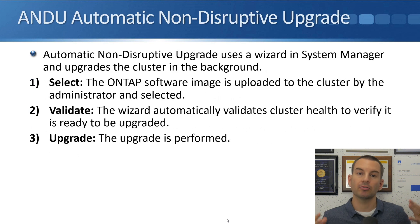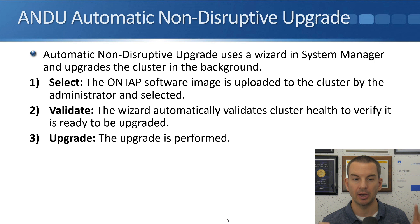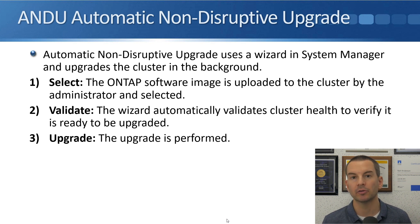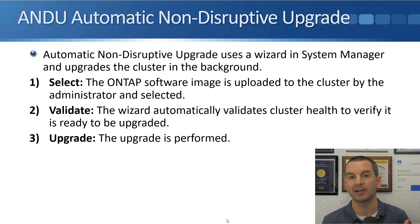The way we're normally going to do the upgrade is using ANDU — the Automatic Non-Disruptive Upgrade — which uses a wizard in the System Manager GUI. There are three stages as you go through the wizard. The first stage is Select, where the ONTAP software image is uploaded to the cluster by the administrator and selected.